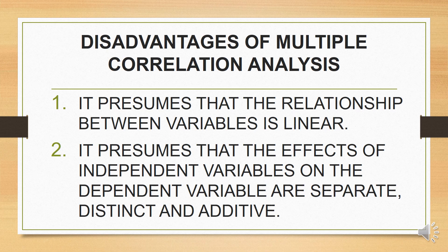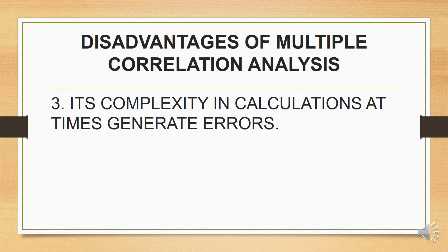Second, it presumes that the effects of independent variables on the dependent variable are separate, distinct, and additive. Third, its complexity in calculation at times generates errors. Linear multiple correlation involves a great deal of work relative to the results frequently obtained. When results are obtained, only few are able to interpret them. The misuse of correlation results has probably led to more doubt on the method than is justified, largely due to the complexity of this method.